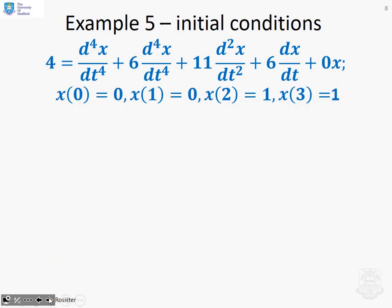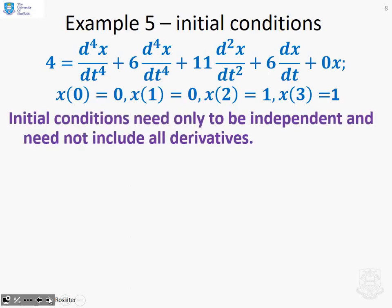Now, Example 5. This example here is just to show that you don't have to do initial conditions which are in terms of the derivative, first derivative, second derivative, and so on. If you want to, you can put any four independent initial conditions. So here you'll see all my initial conditions are done in terms of x. I've got x(0) = 0, x(1) = 0, x(2) = 0, x(3) = 1.